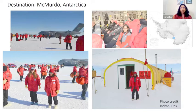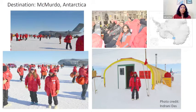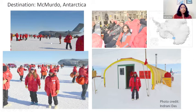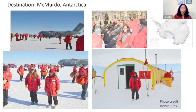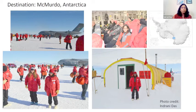So, destination McMurdo. As scientists, we go to McMurdo. We usually fly to New Zealand — Christchurch — and from there take big planes, the New York Air National Guard planes, to take us to Antarctica. We travel in those planes for six to eight hours. This was my first time on ice. When we reach Antarctica, we call it 'the ice.' We were pretty excited — it was the first time in Antarctica for many of my team members. It's such a unique opportunity to be in Antarctica, and I felt very privileged to be there.